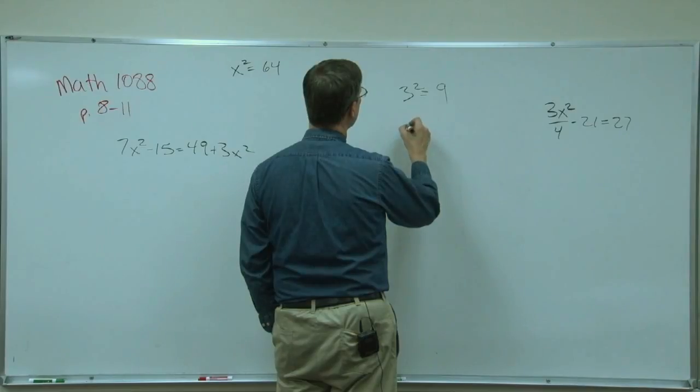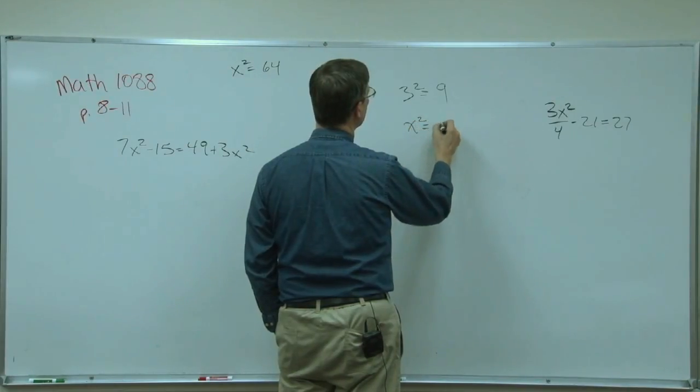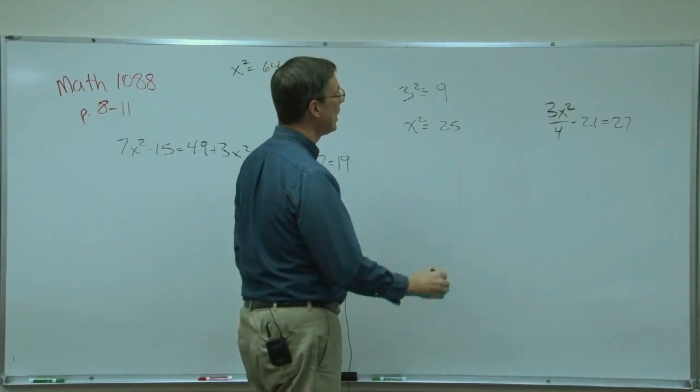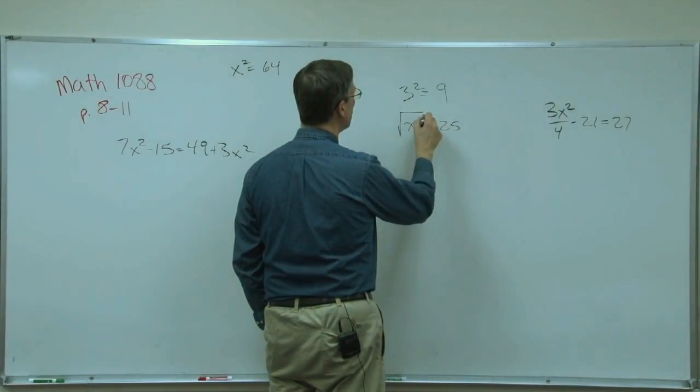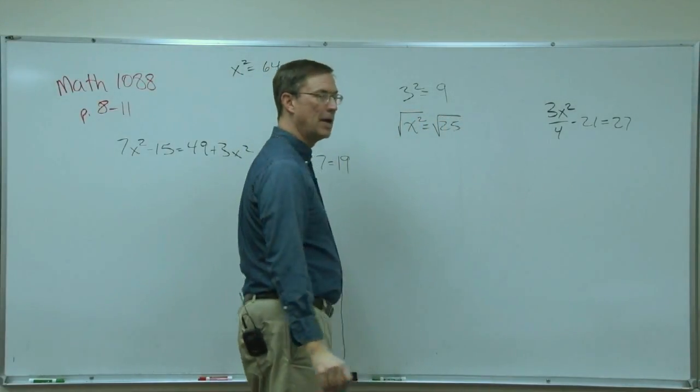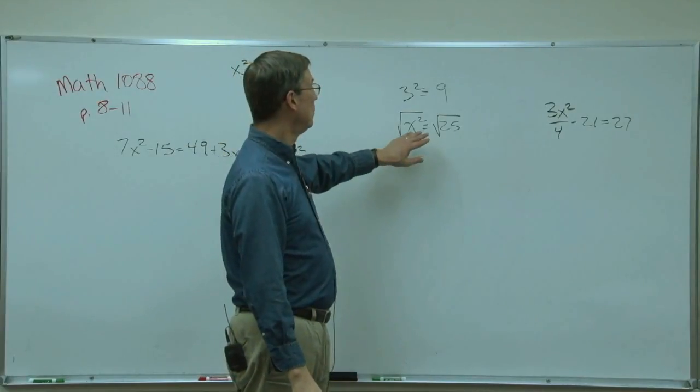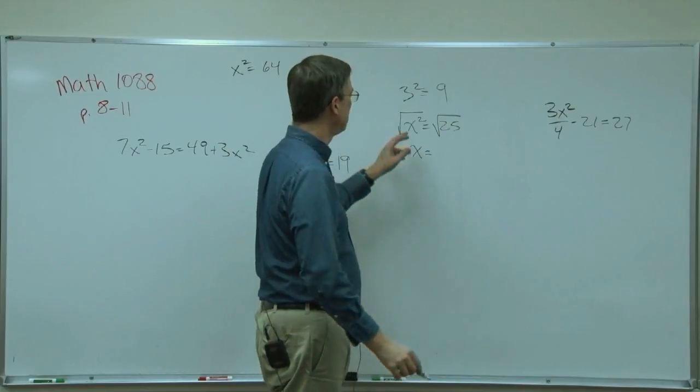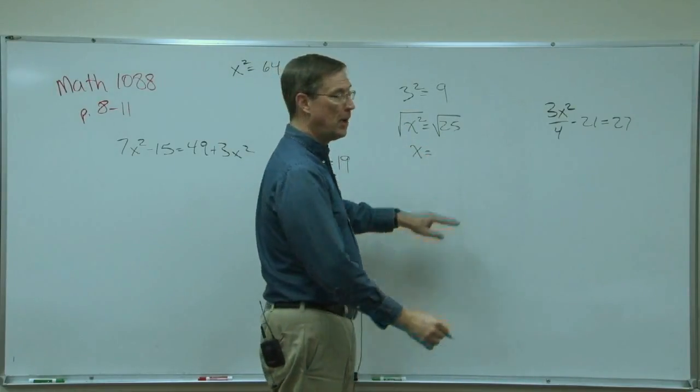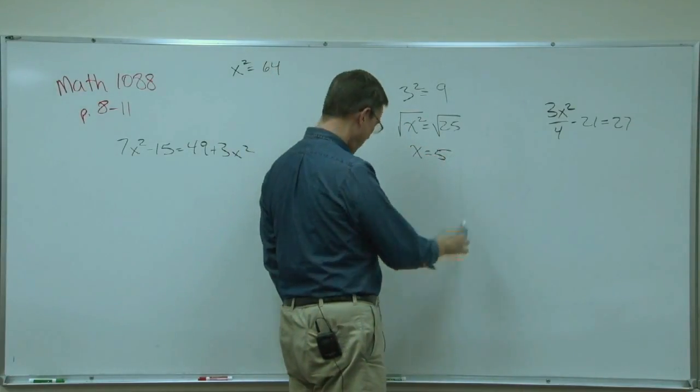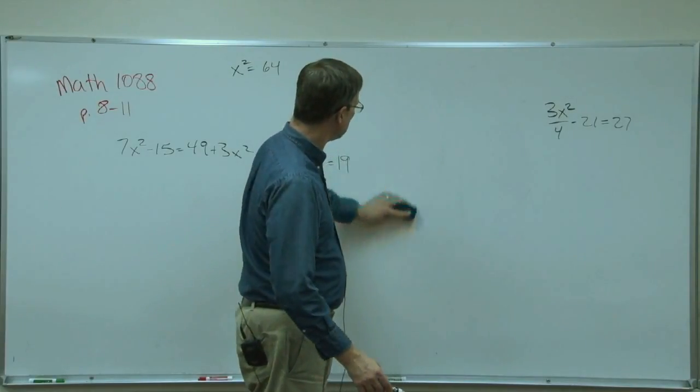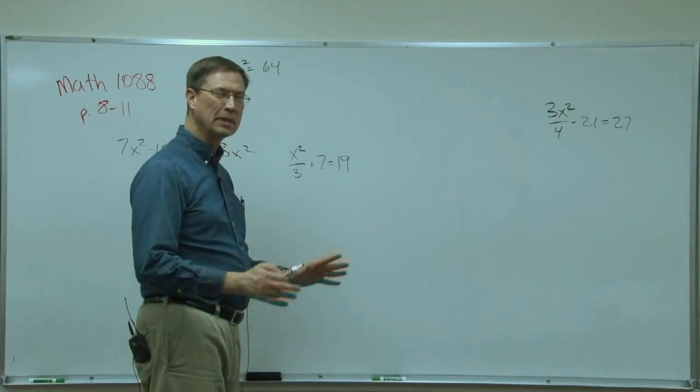If I had x squared equals 25 and I wanted to figure out what x is, what I have to do is the square root of both sides. And so the square root of x squared is x. The x pops out. The square root of 25 is 5. So that's a pretty easy concept. Once you kind of catch on to it, if it's new, it might take a little getting used to.